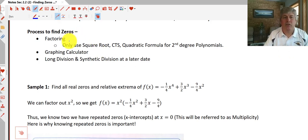Our process for finding the zeros? Factoring. We're going to do quite a bit of factoring. You can use the square root method or completing the square, the quadratic formula, but that's only going to work for second degree polynomials. We'll show you how to use your graphing calculator to help you find the zeros, and at a later date we'll explore how long division and synthetic division can help you find the zeros.